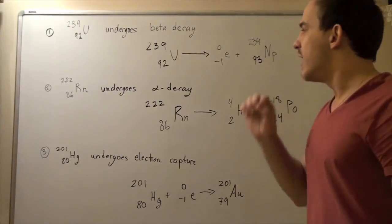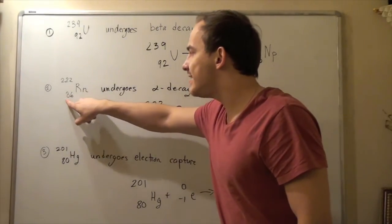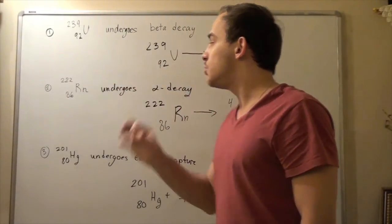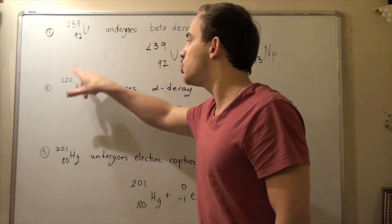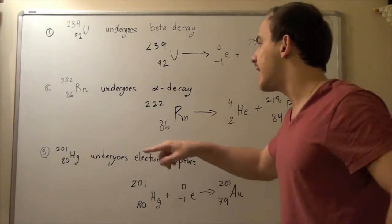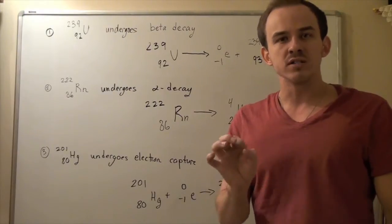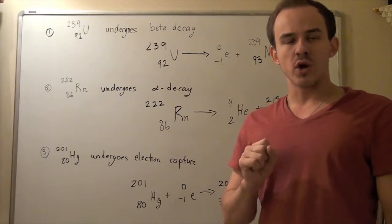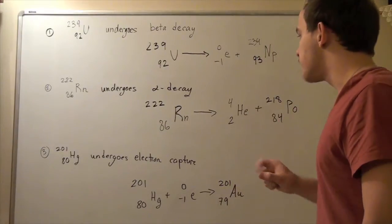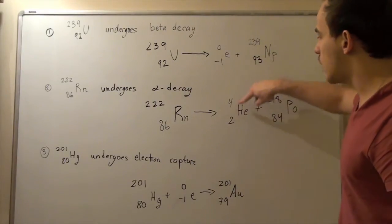Let's look at example number two. In this example, this atom will undergo alpha decay. We have 86 protons and 222 nucleons. To find the number of neutrons, we simply subtract 222 minus 86. This reactant decomposes into an alpha particle as well as another atom. An alpha particle is simply a particle that has two protons and two neutrons, which is the same atomic number as helium. So our alpha particle is in fact helium, which means it has two protons, two electrons, and four nucleons.